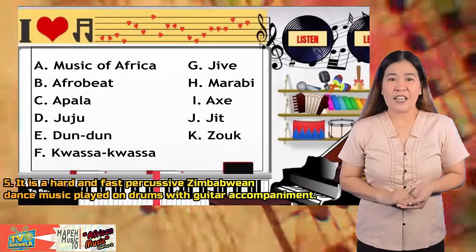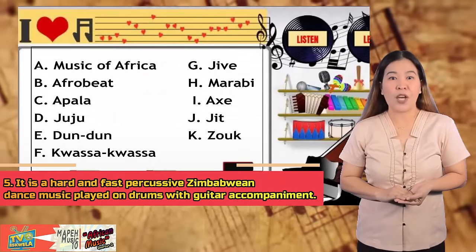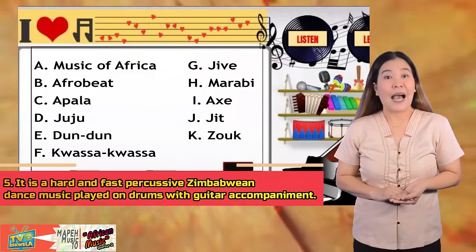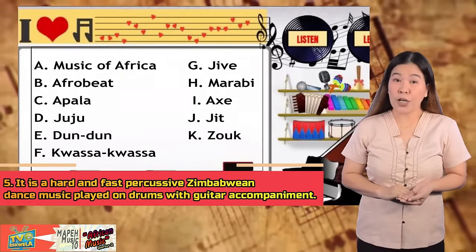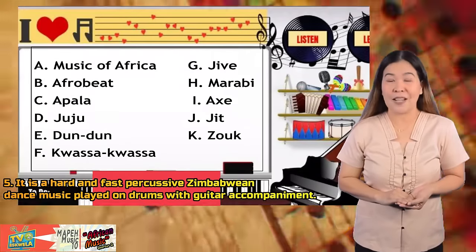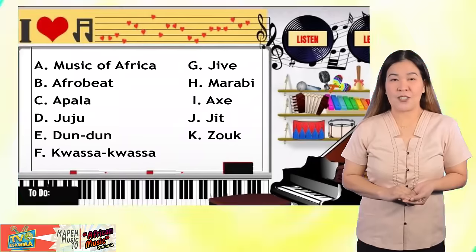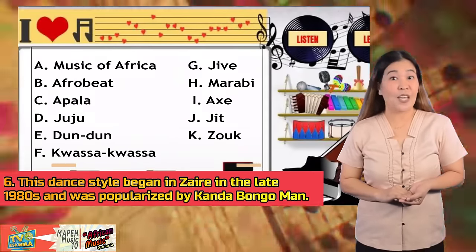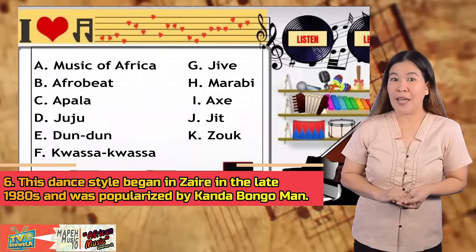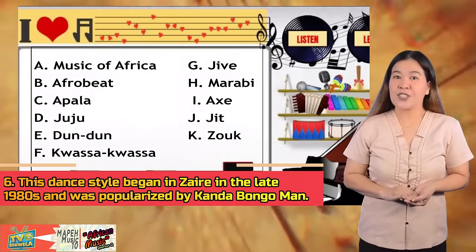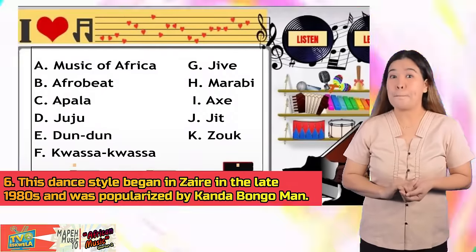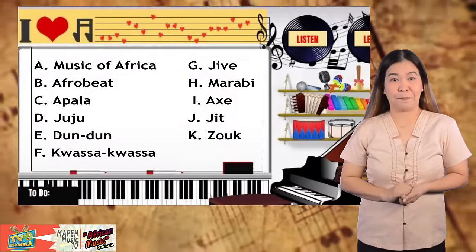Number five: It is a hard and fast percussive Zimbabwean dance music played on drums with guitar accompaniment. Number six: This dance style began in Zaire in the late 1980s and was popularized by Kanda Bongo Man.